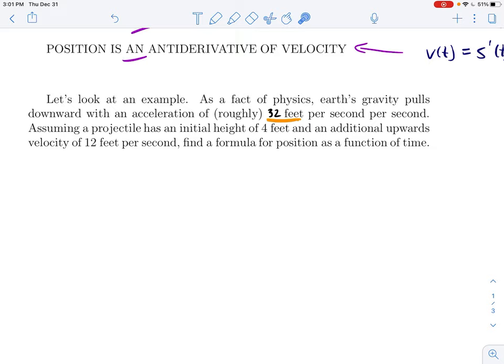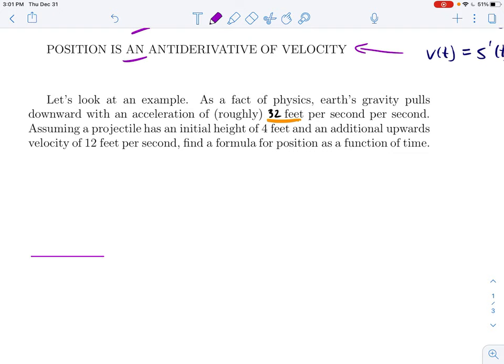I had 16 and there's a reason why I had 16, it's a certain sloppiness. But it should be 32. So just as a fact of physics, Earth's gravity pulls downward with an acceleration of roughly 32 feet per second per second. If you're anywhere near the surface of the Earth, that's basically the acceleration of gravity pulling downward. Now let's assume we have some projectile that has an initial height of four feet and an additional upwards velocity of 12 feet per second.